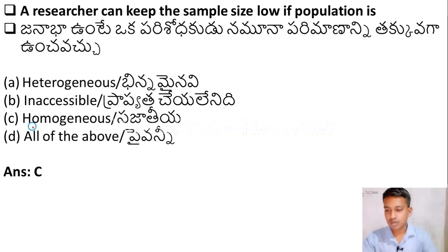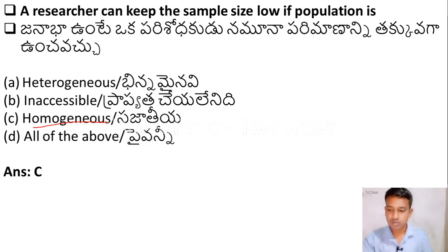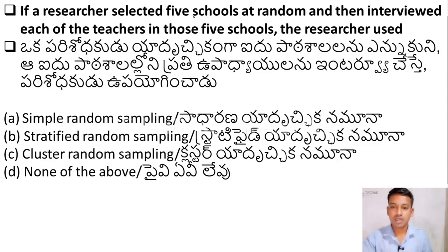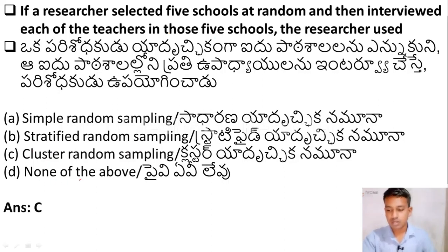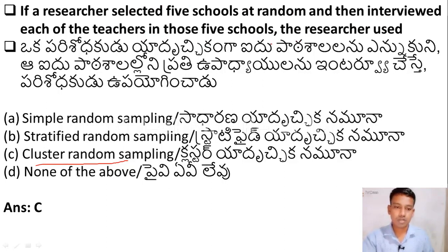When the population is homogeneous, a researcher will keep the sample size smaller. The next question: if a researcher selected five schools at random and then interviewed each of the teachers in those five schools, the researcher used — simple random sampling, stratified random sampling, cluster random sampling, or none of these. The right answer is cluster random sampling, because the researcher is dividing the schools into subgroups.